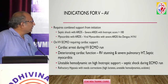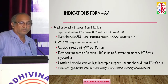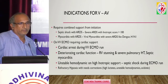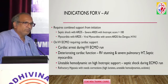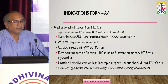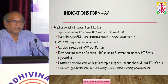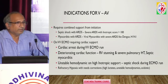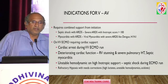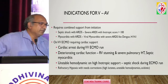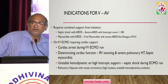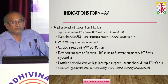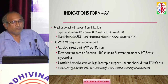The indications for hybrid ECMO include combined support required at initiation — for example, a patient in septic shock with ARDS and an inotropic score greater than 100. Even with no evidence of myocarditis, you might have to put the person on VA-V ECMO. Once hemodynamics stabilize, you can remove the arterial component and convert to VV ECMO. Also, when the patient has both myocarditis and ARDS — such as in dengue, H1N1, or leptospirosis — you start with VA-V ECMO.